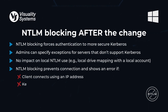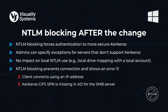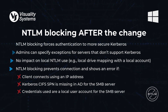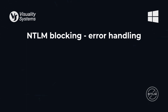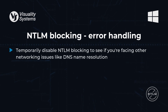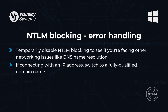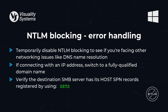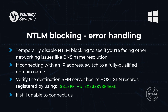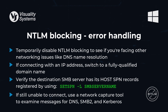Blocking applies if the client uses an IP address, if the Kerberos CIFS service principal name is missing in Active Directory for the SMB server, or if local user account credentials are used for the SMB server. In cases where NTLM blocking triggers an error, troubleshooting steps can help identify the source of the issue. You might temporarily disable NTLM blocking to check for other network issues like DNS name resolution. If you've connected using an IP address, try switching to a fully qualified domain name. You can verify that the SMB server has the necessary host service principal name registered using the Set-SPN command. If still unable to connect, use a network capture tool like Wireshark to examine the client and server messages for DNS, SMB2, and Kerberos.